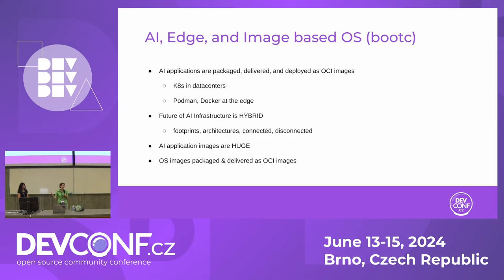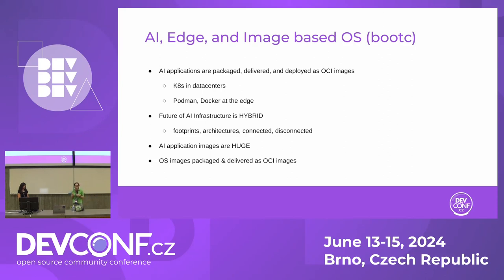Same idea with the edge and that hybrid landscape. With image-based operating systems, from the kernel to your applications, you can now package and deliver an entire operating system as an OCI container image. Things you put in your operating system — like kernel drivers, toolkits like the NVIDIA toolkit — these things are extremely heavy and hardware-specific. So with image-based operating systems, the multi-arch aspect really comes into play too.